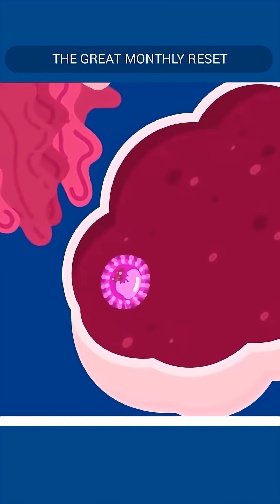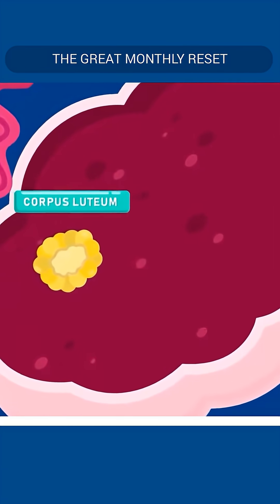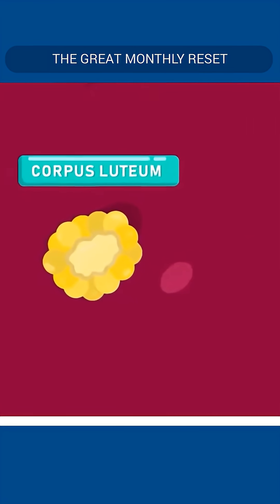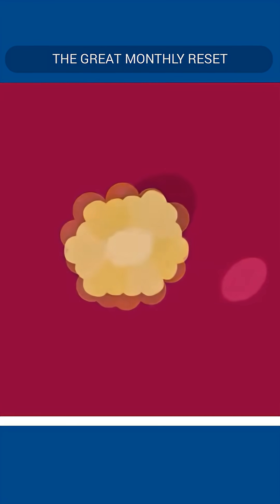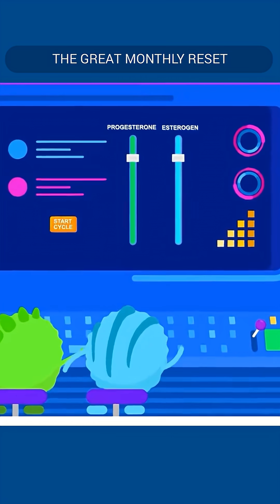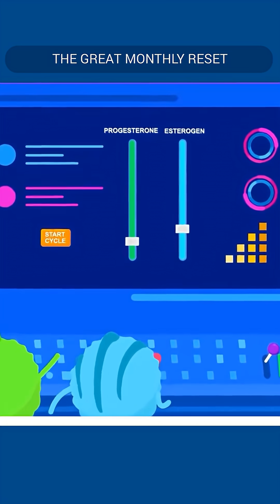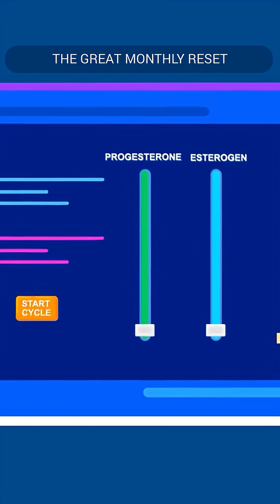After ovulation, the leftover follicle develops into the corpus luteum. The corpus luteum will still persist for some time and then break down. The production of hormones will be stopped, and the menstrual cycle will start over.